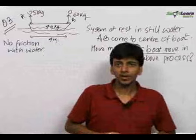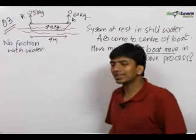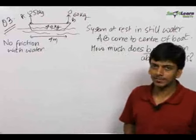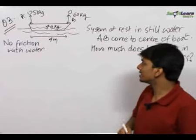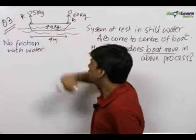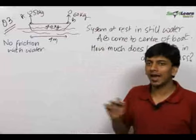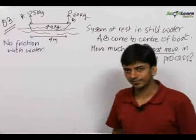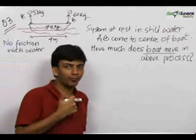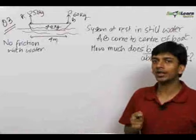The first thing that should come to your mind is that this question will be solved using the concept of centre of mass. If you take the 40 kg boat and the two men as a system, there is no external force acting on the system in the horizontal direction.